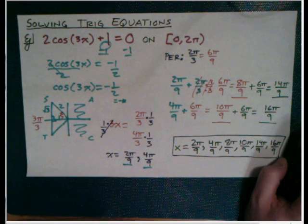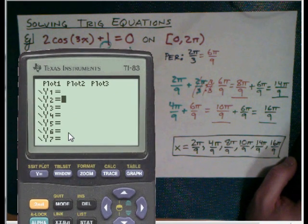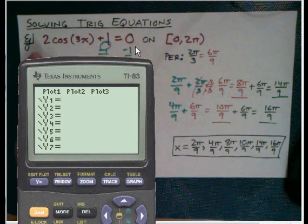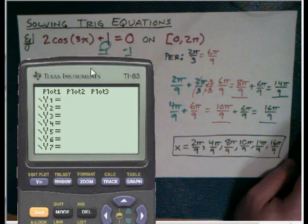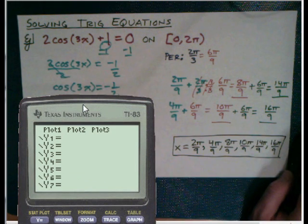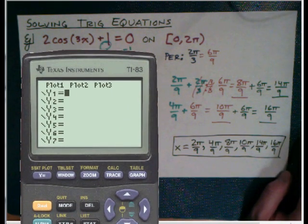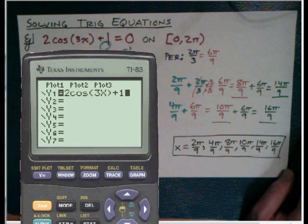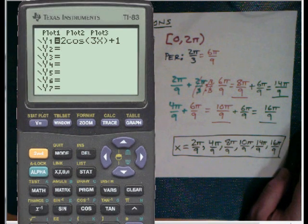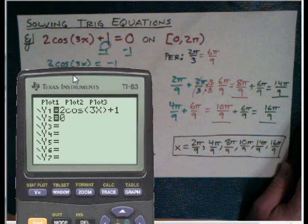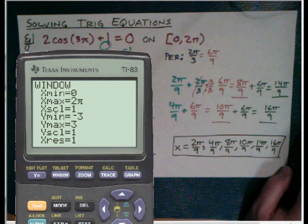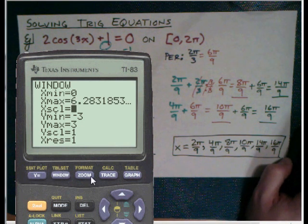So let me find my calculator. We're going to graph this equation and see if it works. So here we go. Let's get ready. 2 cos 3x plus 1. And then we're going to set it equal to 0. So we want to see if this is true. Our window goes from 0 to 2 pi. And let's find out.